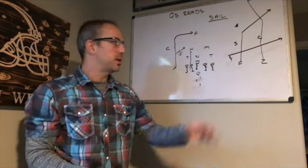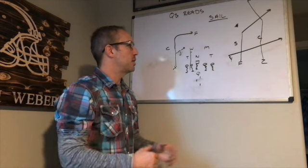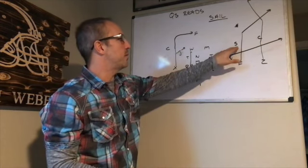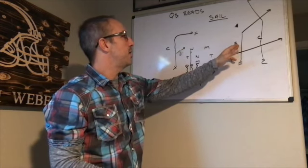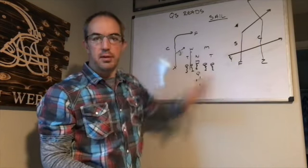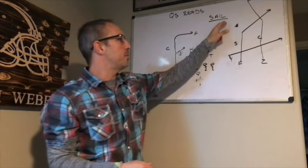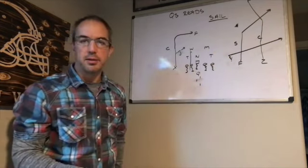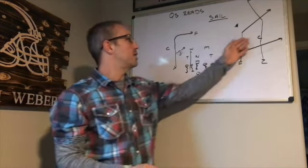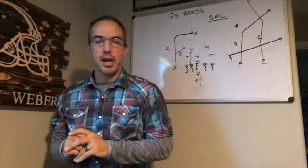He's going to read the flat defender first - flat defender to safety. He's going to look inside. What's the flat defender doing? Does he bail with number two? If he bails with number two, throw the flat. Obviously get your eyes over to the corner when you're ready to throw the flat, in case it's cover two.